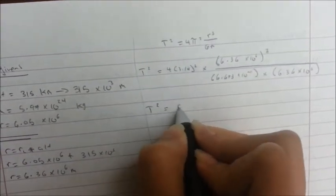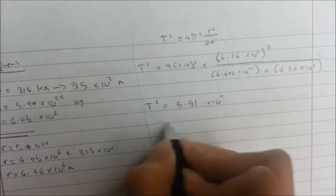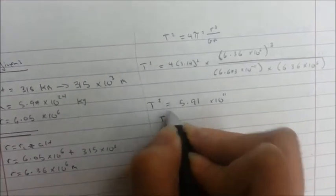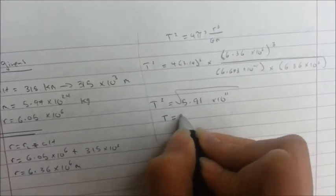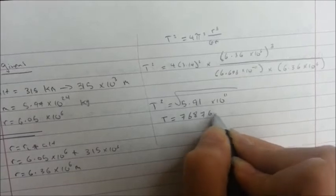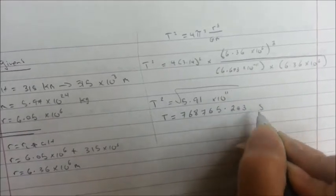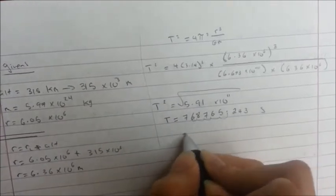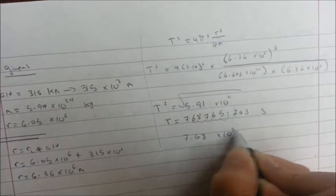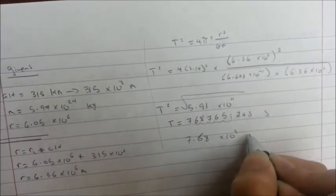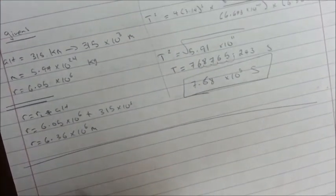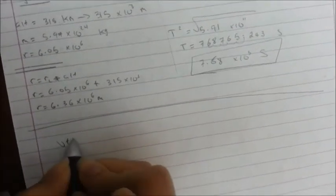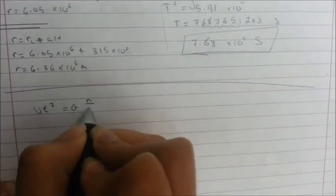T squared equals 5.91 times 10 to the power of 11, so T equals 768,765.243 seconds, which in scientific notation is 7.68 times 10 to the power of 5 seconds — this is our final answer for the orbital period. Now, to find the orbital speed, we use the other formula with the same givens: Vt squared equals GM over R.